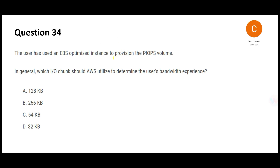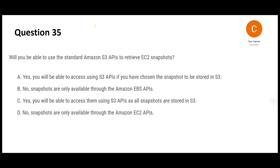This question is about an EBS optimized instance and which I/O chunk size determines the bandwidth experience. My understanding is that this particular chunk size can provide maximum bandwidth. There is no specific logic beyond that — this chunk has been designed for bandwidth experience. So I would just choose this answer. Now let us go to the next question.